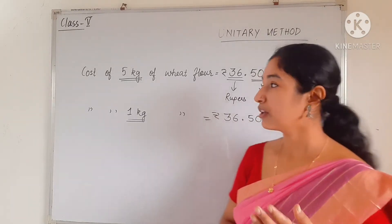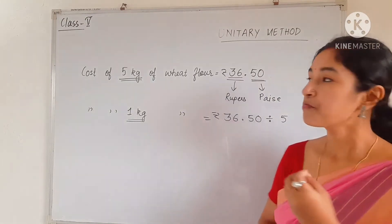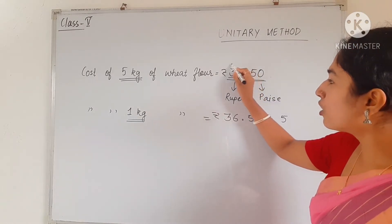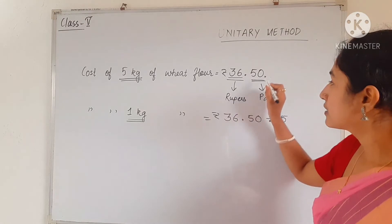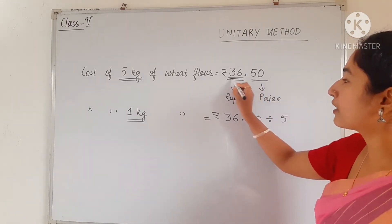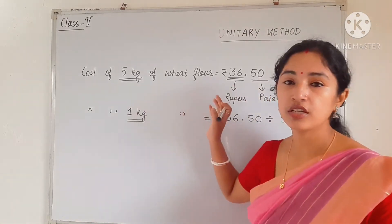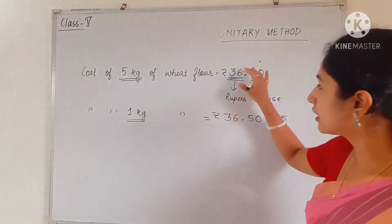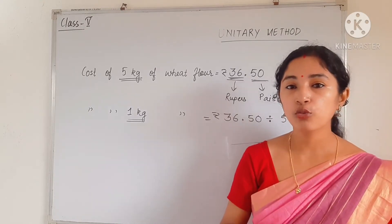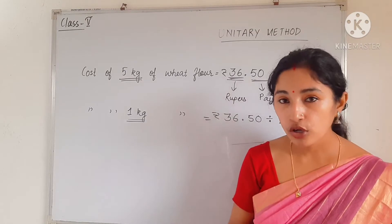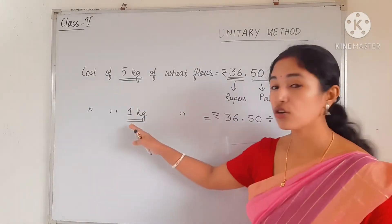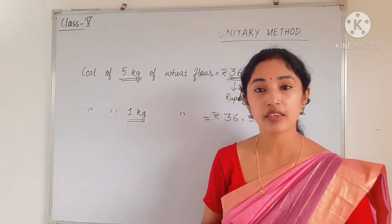Here is one example: the cost of 5 kg wheat flour is given as rupees 36.50. The whole part, 36, is in rupees and the decimal part, 50, is in paise. If the cost of 5 kg wheat flour is given, we can easily find the cost of 1 kg by dividing the total cost by 5. Suppose you want to buy 2 kg of wheat flour — first find the cost of 1 kg, then find the cost of 2 kg.